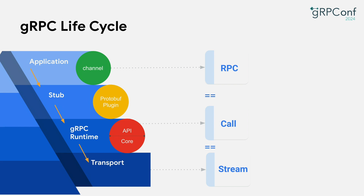gRPC is very simple to use. The application only needs to send a request on the stub that is created from the channel. The stub is at the protobuf generated layer, which is also the first layer that you will see when using gRPC. The stub creates a call towards the gRPC runtime, which then further creates a stream on the transport. In gRPC, an RPC, a call, or a stream are fundamentally the same concept — just referred to by different names at various stages in their lifecycle.